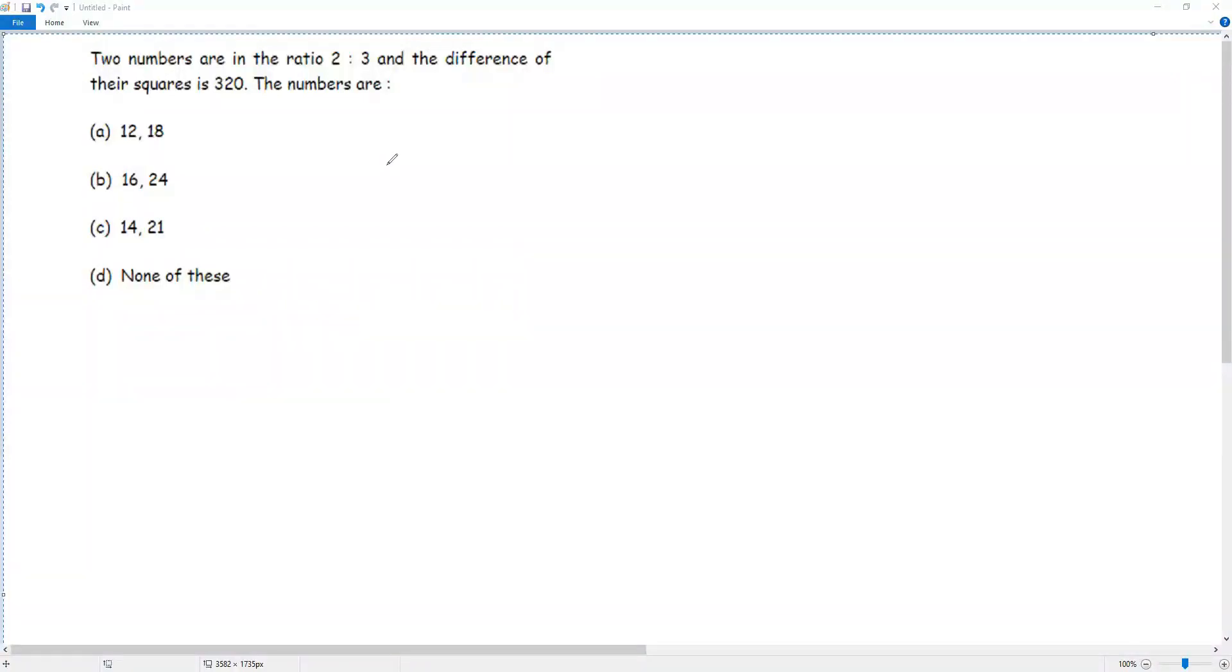Two numbers are in the ratio 2 is to 3 and the difference of their squares is 320. Here, the ratio between the two numbers is given, that is 2 to 3.